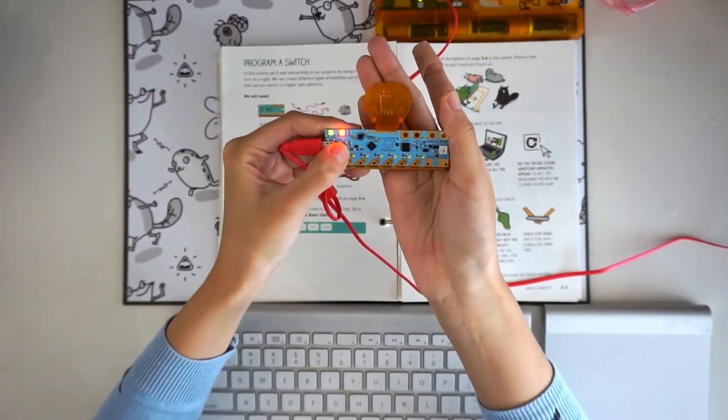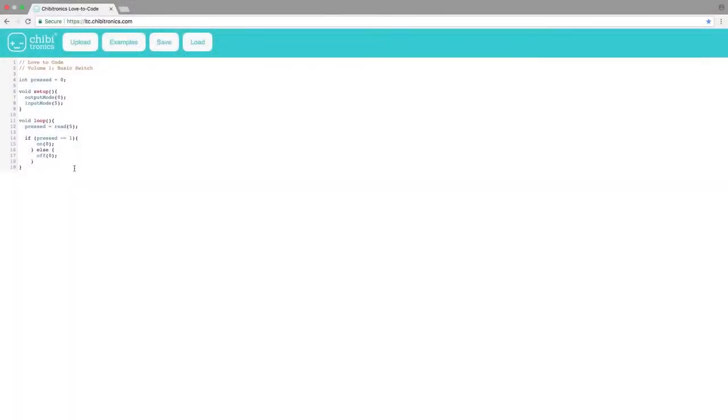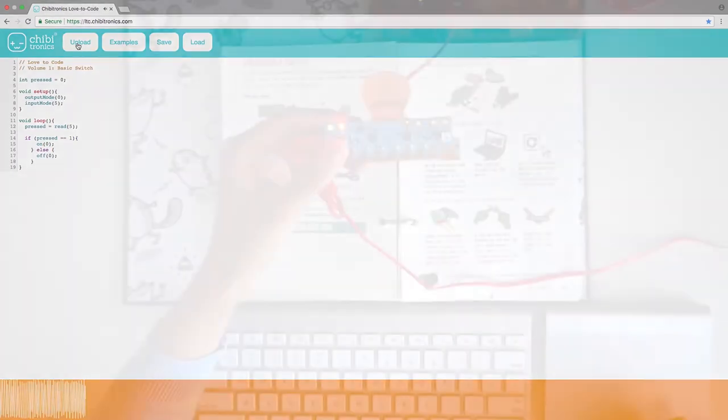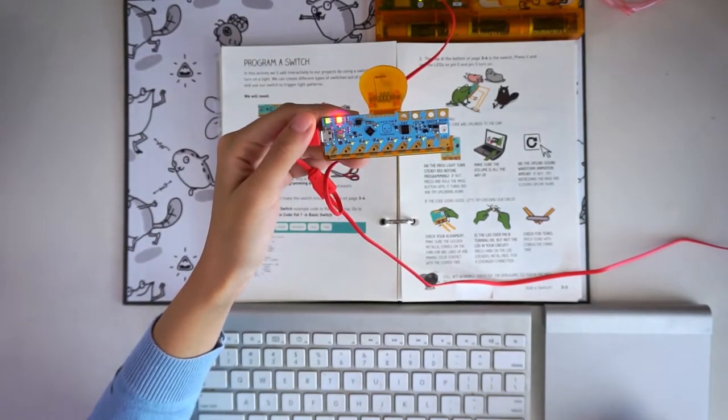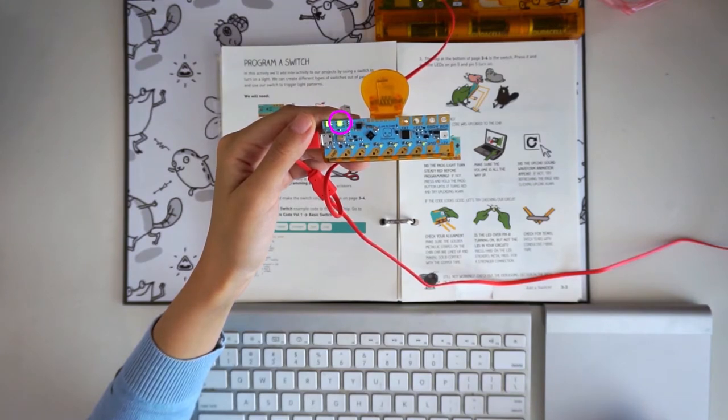To upload the example, press and hold the Progue button until the Progue light turns red, and click Upload. Remember that the volume needs to be turned all the way up! When programming is complete, the Progue light will turn green. If you aren't touching any of the pins on the Chibi chip, this will be the only indication that the programming is finished.